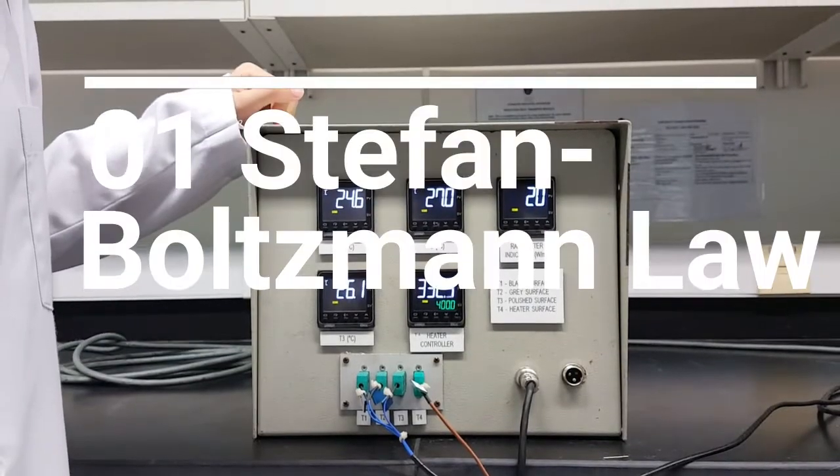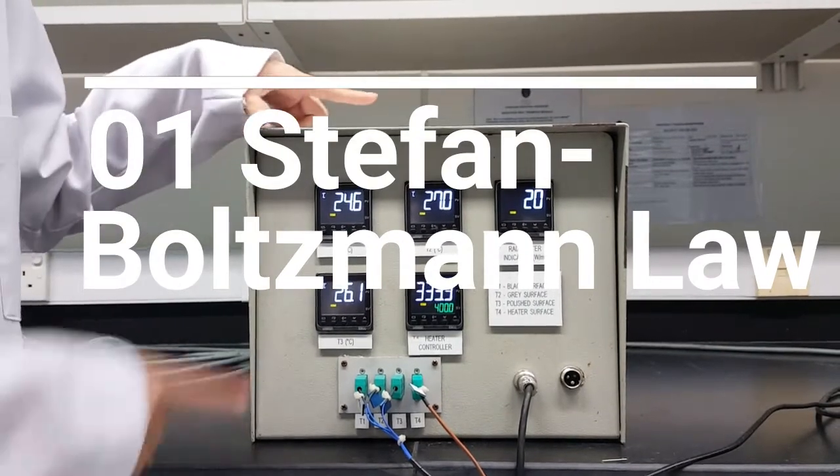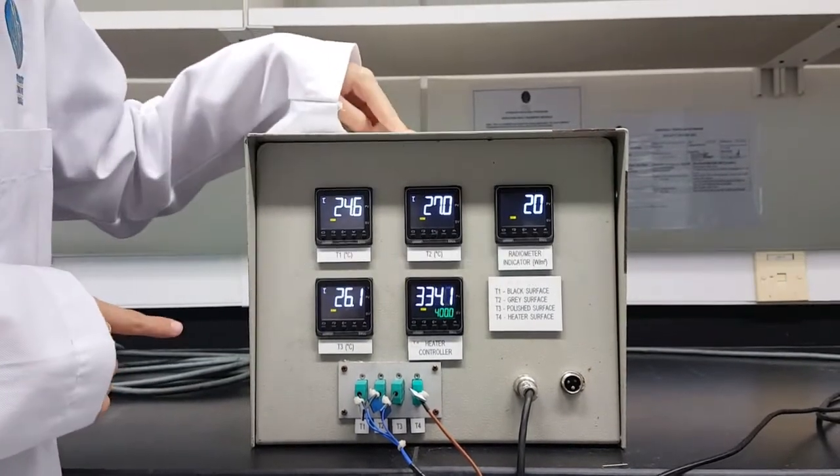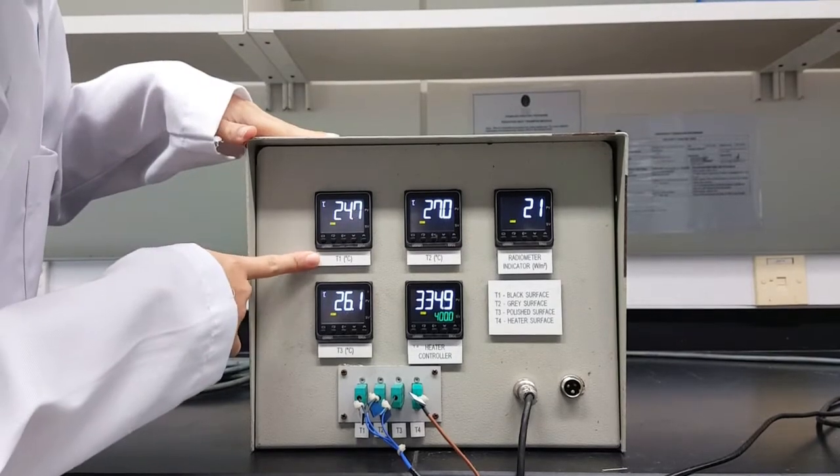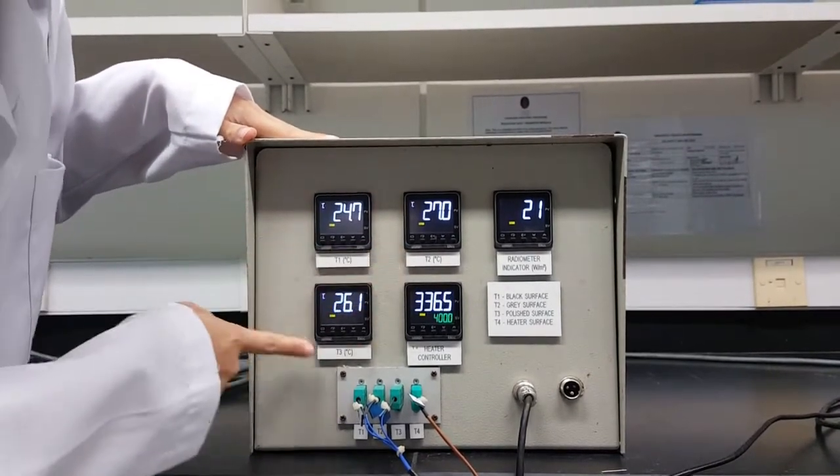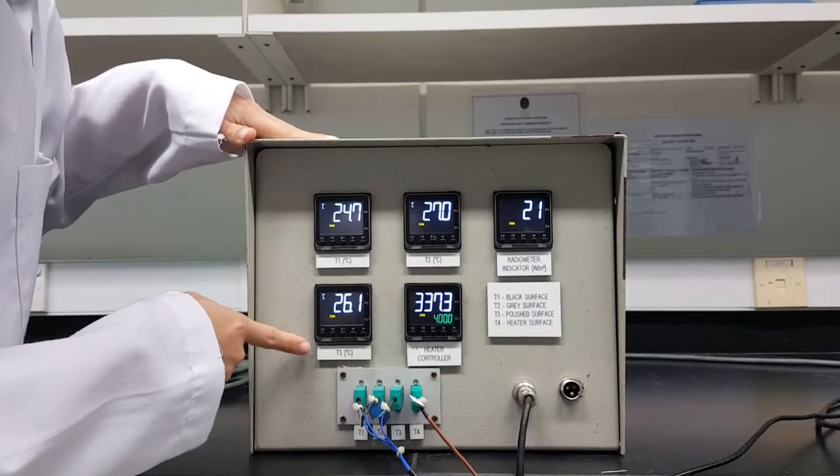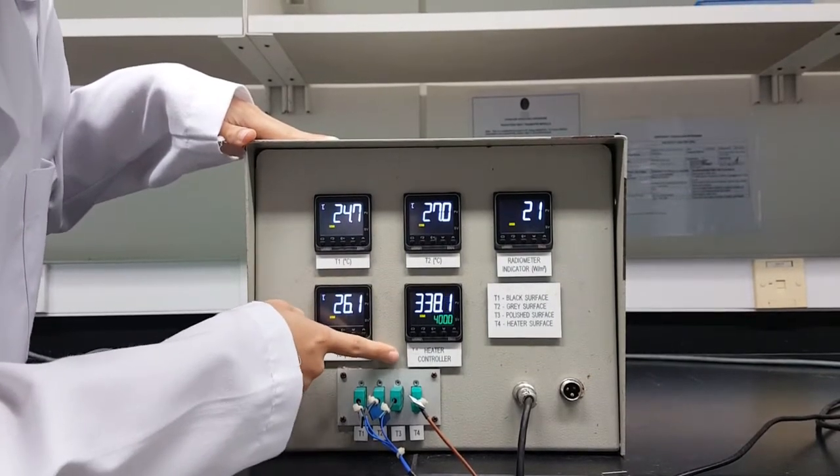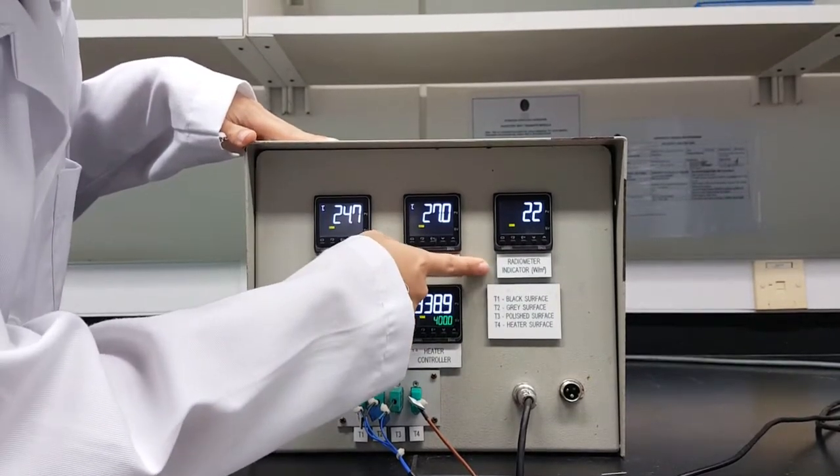Let me explain the equipment for this experiment. Here is a radiation heat transfer rig. You can see T1, black surface temperature. T2, gray surface temperature. T3, polished surface temperature. T4, the heated surface. And radiometer indicator.